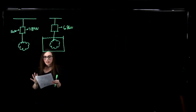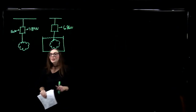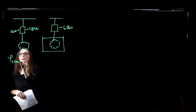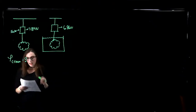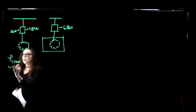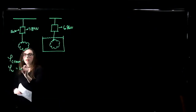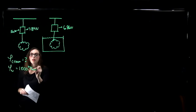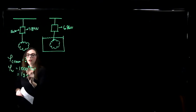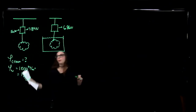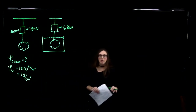We're asked: is the crown made of gold? Or essentially, what is the density of our crown? We know that the density of water is 1,000 kilograms per meter cubed — it's also 1 gram per centimeter cubed — so depending on how we set up the problem, we could use either one of those.